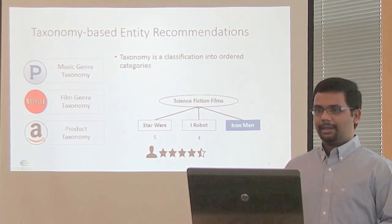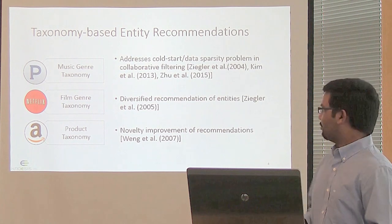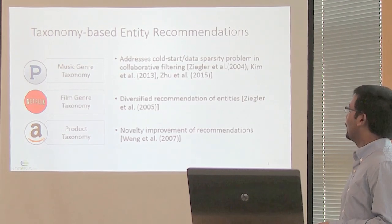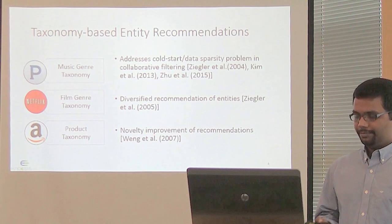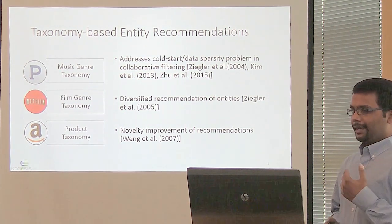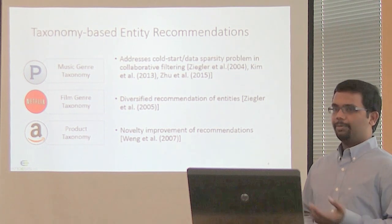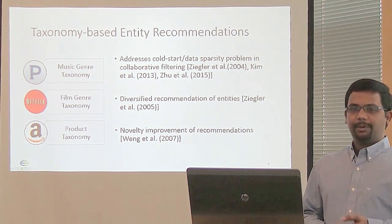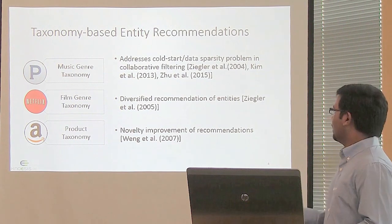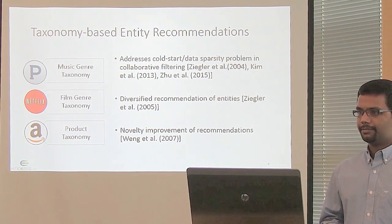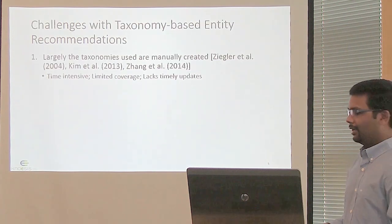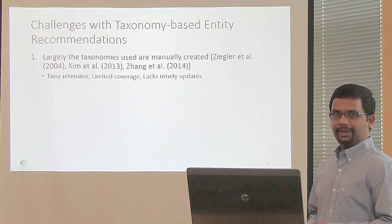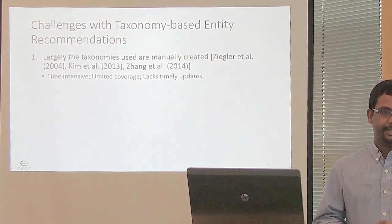Utilizing taxonomies has multiple advantages. Researchers have shown that taxonomies have solved the cold start problem and data sparsity problems. These two problems arise when there is less interaction from a user on a platform. Using taxonomies as background knowledge can help solve this problem. Taxonomies have also improved recommendations in terms of diversity — diversifying recommendations and recommending novel entities to users. However, the taxonomies used are largely manually created, which is a time-intensive process with limited coverage and lacks timely updates.